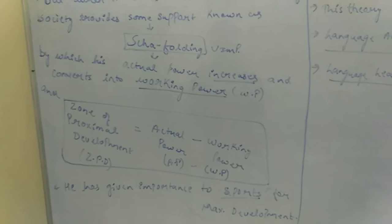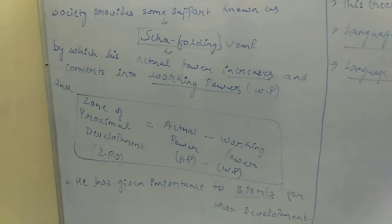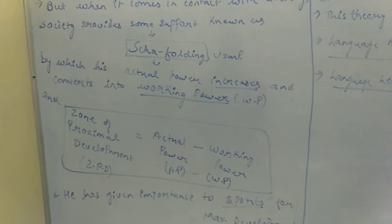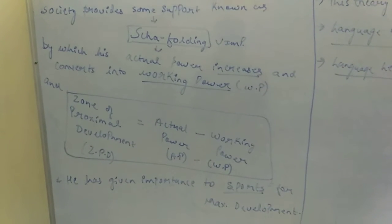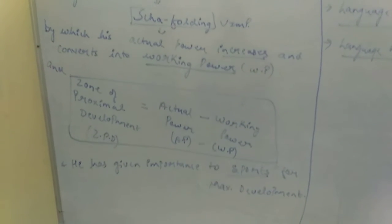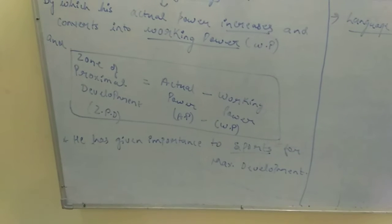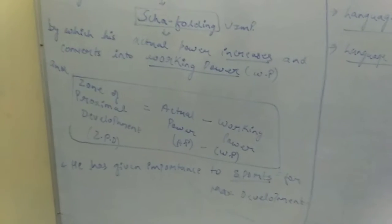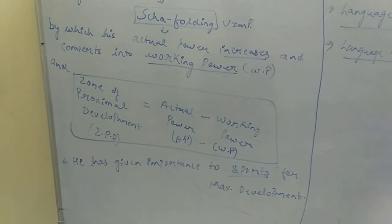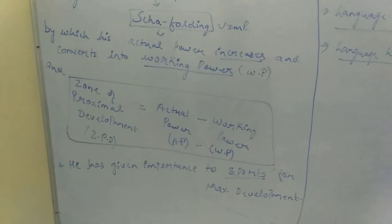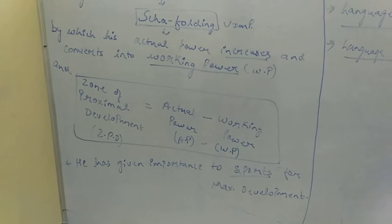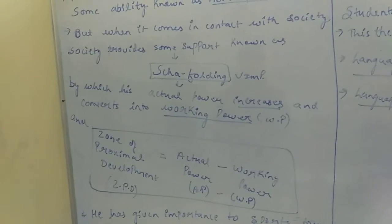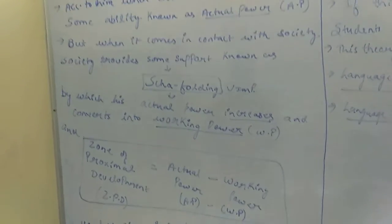There is a term called ZPD — Zone of Proximal Development. This is very important. To calculate ZPD, you take actual power minus working power. ZPD = AP minus WP. This shows how much the child has learned and how much potential remains to be developed through scaffolding.